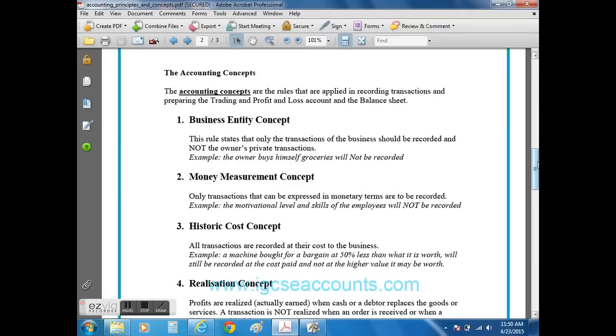The first rule is the business entity concept which simply states that only business transactions should be recorded by the accountant. So if the owner goes out and buys groceries for himself or herself to be used at home, of course, that transaction would not be recorded by the accountants of the company.